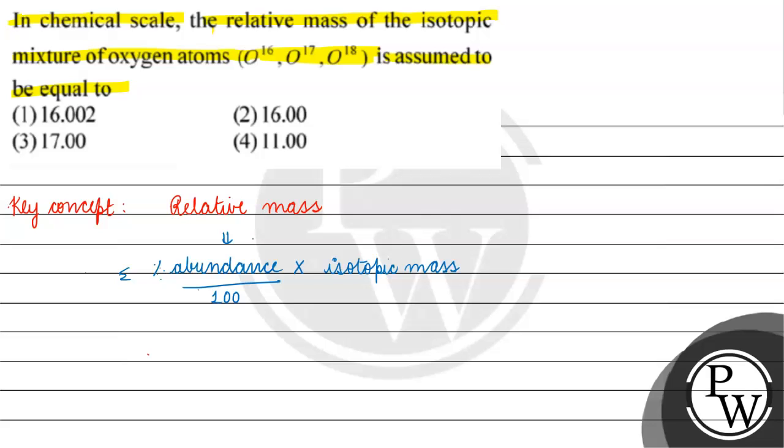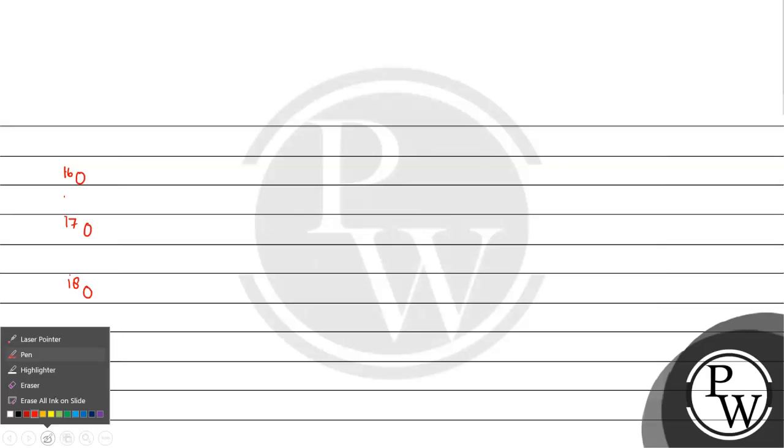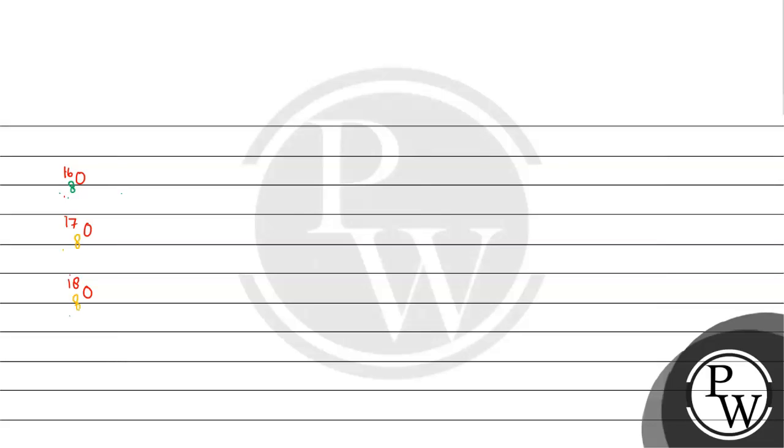Now, let's talk about O16, O17 and O18. What are these isotopes? What is the difference between them? It is different mass number. This is atomic number. What is the atomic number? Atomic number 8. This is the atomic number 8.